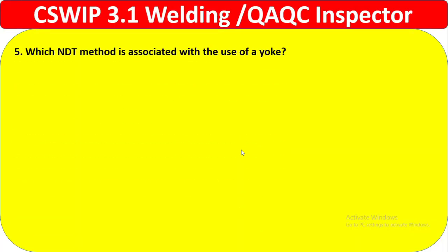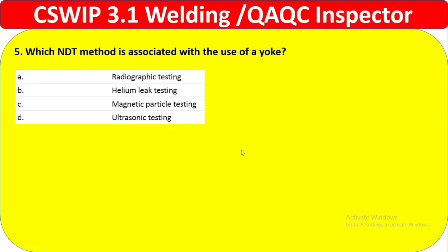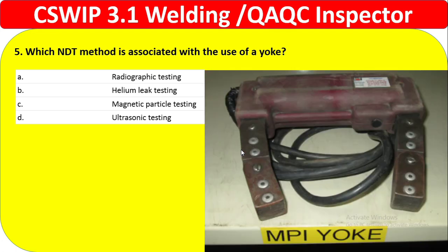Question 5: Which NDT method is associated with the use of a yoke? Option A — radiographic testing, B — helium leak testing, C — magnetic particle testing, D — ultrasonic testing. We know very well that the yoke is always used in magnetic particle testing and never in radiographic or other methods. The MPI yoke looks like a horseshoe magnet. The answer is C.